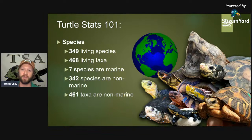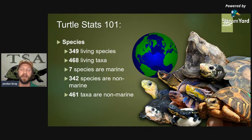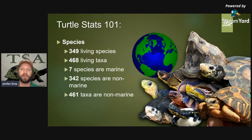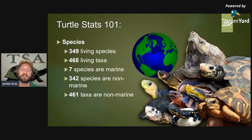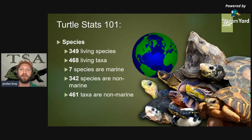Of those, the most well-known group — marine or sea turtles — actually has only seven species spanning the globe. That means 342 living species are non-marine: terrestrial, semi-aquatic, or mostly aquatic. There is an incredible diversity of turtles out there that many people don't know about, and I urge you all to learn more about them.